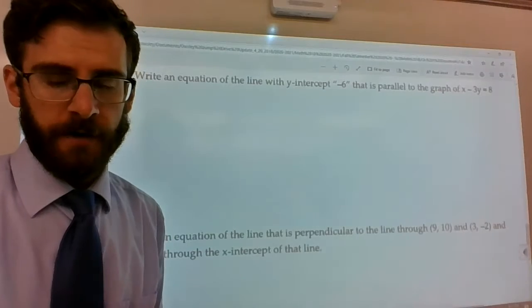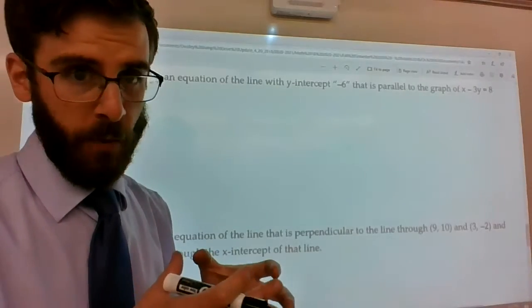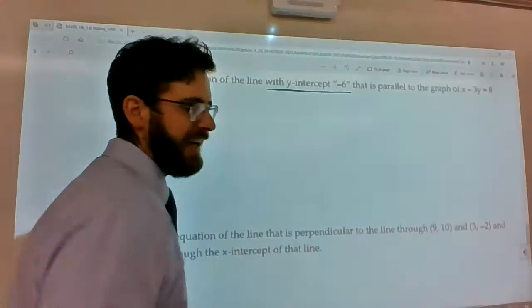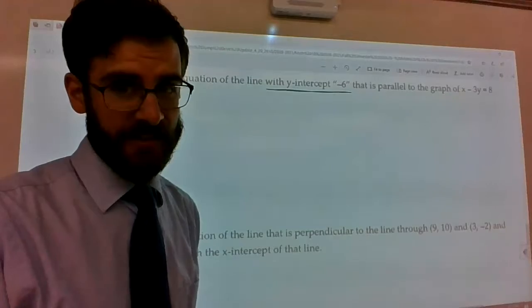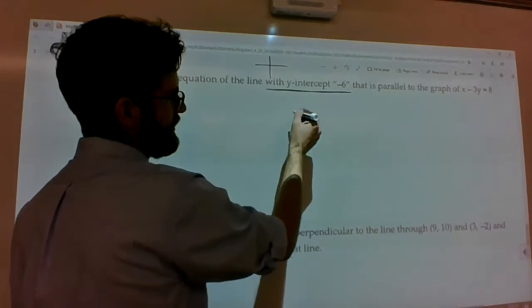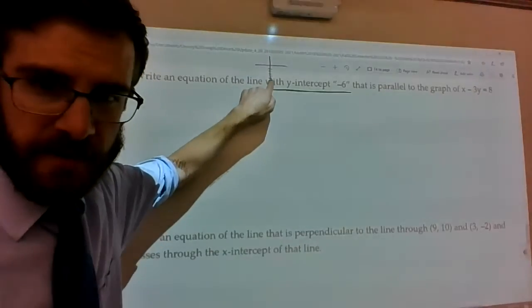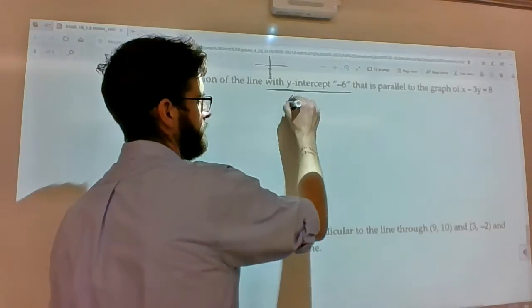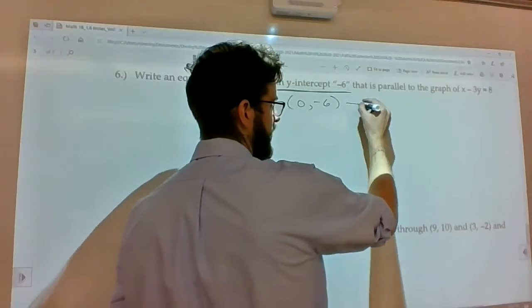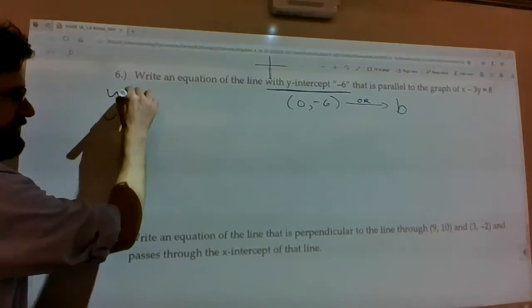So, it seems like the missing piece here is that they didn't give us a point that it passes through, or at least they didn't say that it passes through a specific point. What they're doing here is they're saying, this is the point that it passes through. It hits the y-axis at negative 6. So, you can think about this in two ways. If you're on the y-axis, specifically at negative 6, we should be able to say what that ordered pair is. It's 0, negative 6.